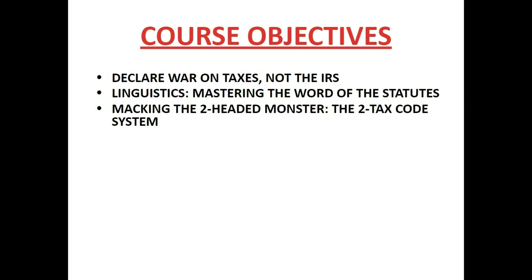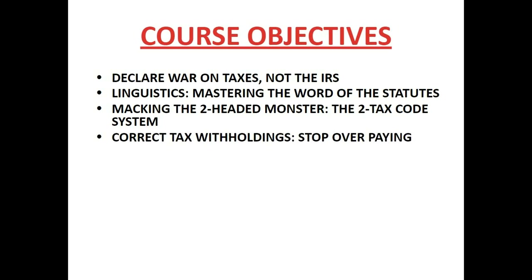Next, we talk about that two-headed monster — there's a two-tax law system here in America. There's one set of tax laws for employees and another set for entrepreneurs. You have to master both. We start as employees, and it's imperative we get into the other one to really advance ourselves in capitalism. Next, correcting tax withholding — stop overpaying taxes. The IRS says 100 million hardworking Americans overpay their taxes every pay period, having too much money withheld from their paychecks. A third of your income typically goes to taxes. You make $15 an hour — $5 of that goes to taxes. In an eight-hour shift, the first two hours and 45 minutes you're working just to pay taxes.